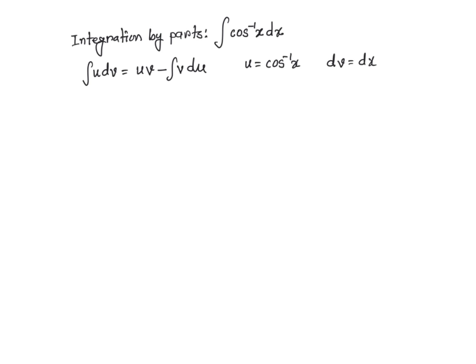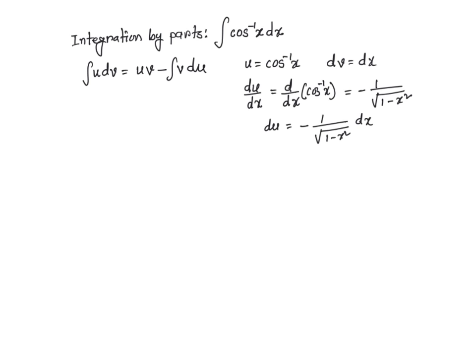Now, if I take the derivative of u with respect to x, du over dx is going to be equal to the derivative of cosine inverse of x with respect to x, and it is going to be negative 1 over the square root of 1 minus x squared.